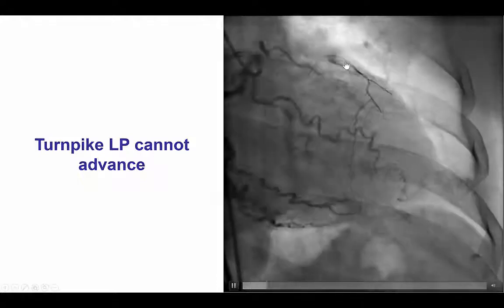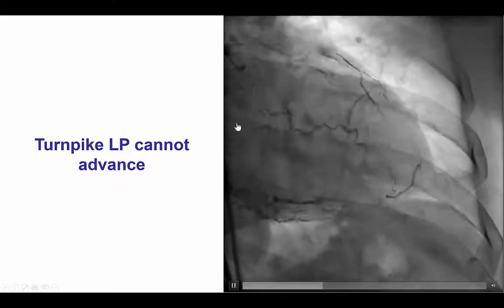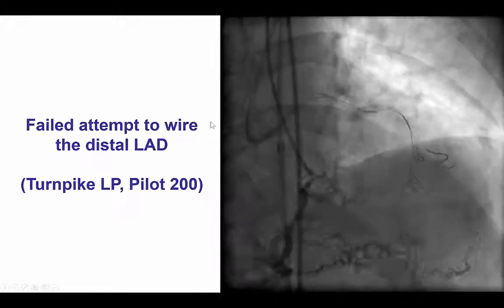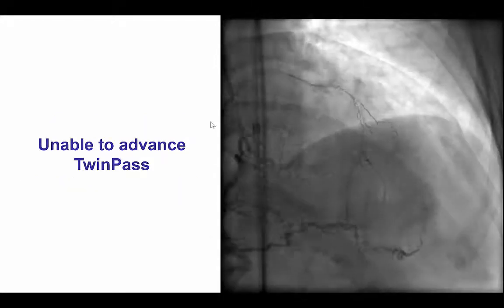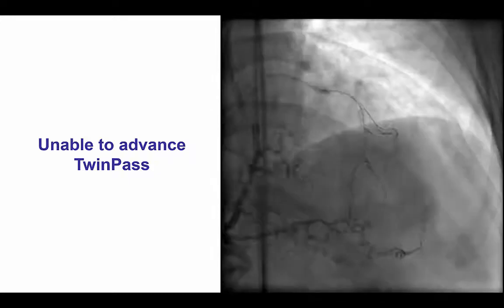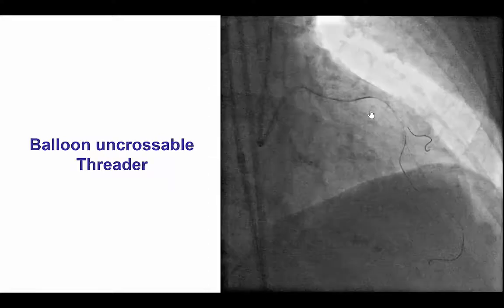In this particular case, however, the Turnpike would not advance past that area of the mid-LAD, probably because of severe tortuosity. We tried again with another wire and could not do it, and we could not advance a TwinPass past the mid-LAD to the distal cap — once again due to severe calcification. However, by doing significant wire escalation with another Pilot 200 wire, we were then able to advance through the distal cap into the LAD.